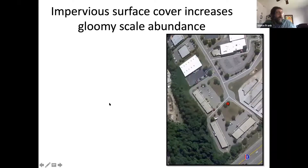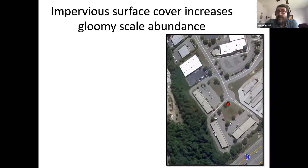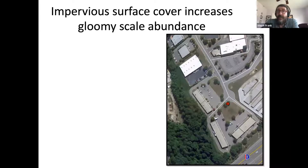The other thing to think about in terms of armored scale management — what we think a lot about in the lab — is what causes scale infestations to begin with. If you go hiking in the woods, you don't find trees covered head to toe in scale insects, but urban trees are covered. To condense years of research, the primary indicator is the amount of impervious surface cover around a tree. We've studied this with gloomy scale and other species. Impervious surface cover like roads, sidewalks, and rooftops increases ambient air temperature around the tree and reduces water infiltration and soil moisture, putting trees under stress.